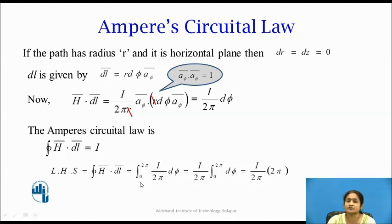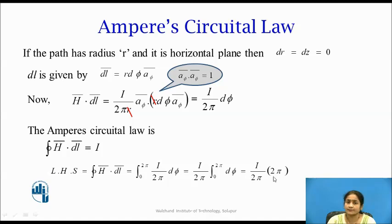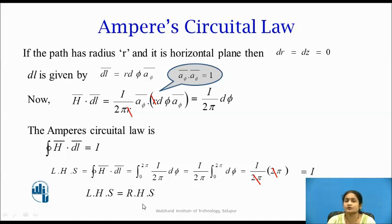Substituting into the Ampere's Circuital Law equation, the LHS becomes the closed integral of H̄·dL̄ = integral from 0 to 2π of (i / 2π)·dφ. Since i and 2π are constants, they come outside the integral. Integrating dφ gives φ; substituting the limits 0 to 2π and cancelling 2π gives i. Therefore, LHS = RHS = i, which proves Ampere's Law.